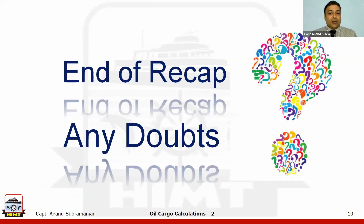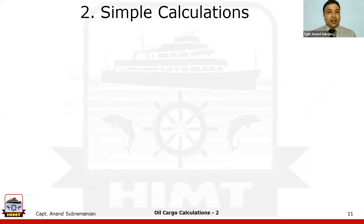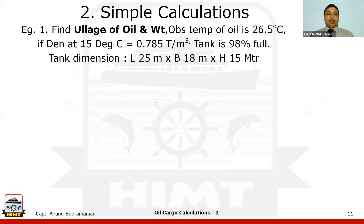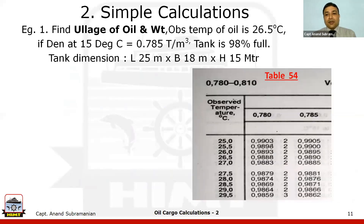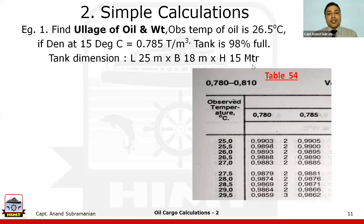Before going to the actual calculations of list and trim, let's do a simple calculation based on what we've covered so far. We need to find the ullage of the oil and the weight of the cargo in the tanks. The given conditions include: observed temperature, density, the tank is 90% full, and the tank dimensions are provided along with Table 54 for reference.